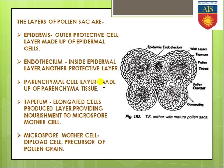The parenchymal cell layer is another layer where only parenchyma tissue or parenchyma cells are present — like the parenchyma cells present in the leaf. Those specific parenchyma tissue-like cells are present in this specific cell layer.